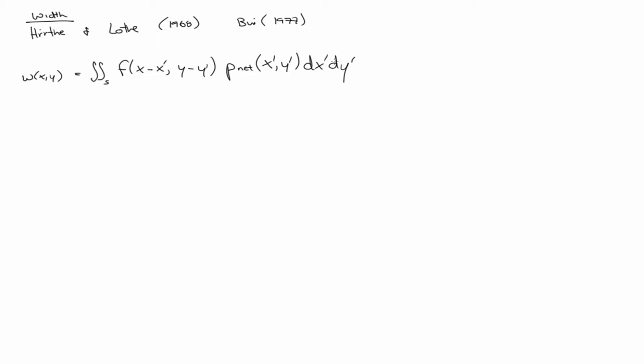The primes are the dummy variables of integration, and if you recognize this, this is the so-called convolution integral. So we're convolving the net pressure inside — and that's a pressure distribution, so it can be non-uniform — with some function f. And the function f, let's just call it an elastic influence function. So f is an elastic influence function, and for right now we'll just leave it at that, because deriving one is beyond the scope of the class.